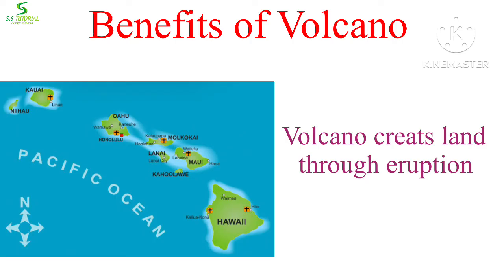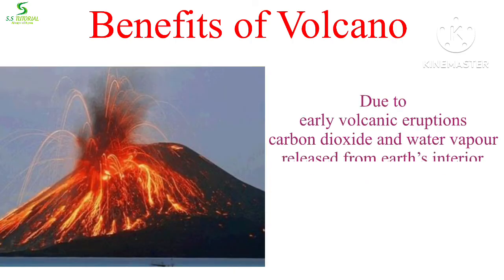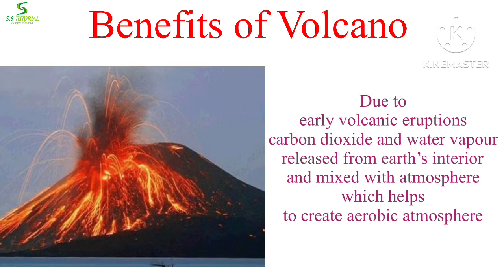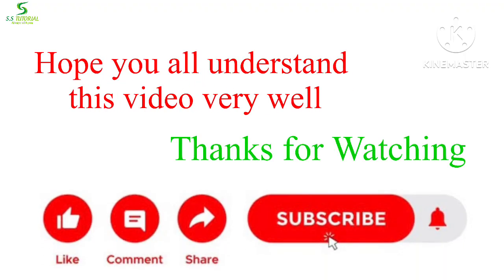Volcanoes create new land through their eruptions — Hawaii island is one of the most important examples. Billions of years ago, during early volcanic eruptions, water vapor and carbon dioxide were released from the earth's interior and mixed with the atmosphere, which helped Earth form its current atmosphere. Hope you all understood this video well. Thanks for watching.